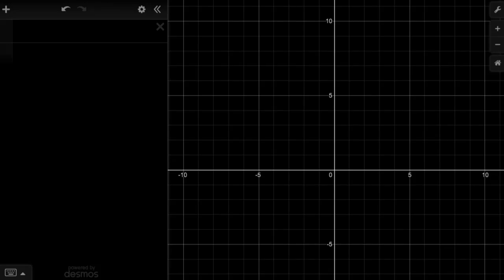So I am here at desmos.com, which is an online graphing calculator. And the goal of this video is to explore how shifts in functions happen. How do things shift to the right or the left? Or how do they shift up and down? We're going to start off by graphing a plain vanilla function, f of x is equal to x squared.